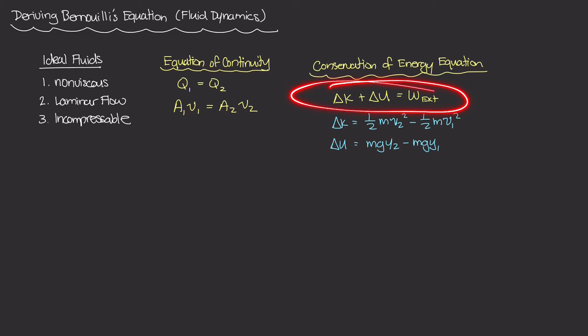If there were no external forces, the work term would be zero, meaning the total energy delta K plus delta U remains the same — always equal to zero. In other words, energy in the system remains constant: it's not created, not destroyed, just transformed from one form into another.